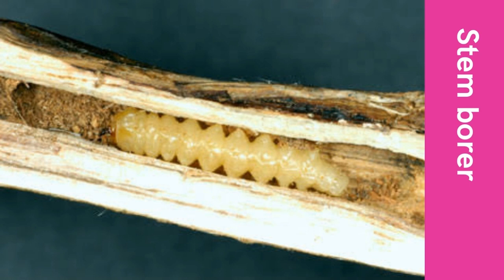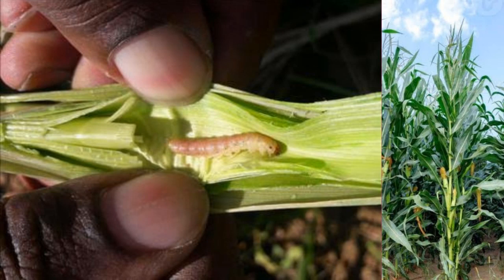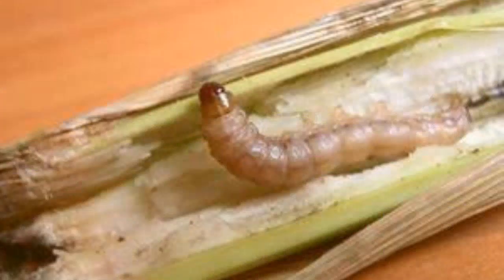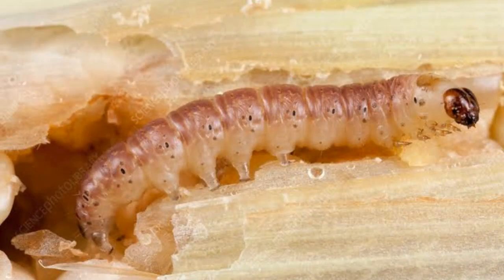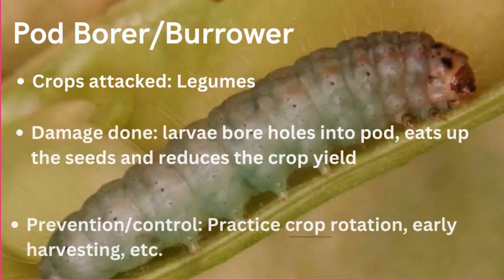Stem borers normally attack cereal crops, especially rice, maize, and guinea corn. They bore holes into the stems of crops, causing the plants to weaken, and they also eat up the tissues of the stem. Stem borers are examples of boring insect crop pests, while armyworm is an example of biting and chewing insect crop pests. Preventive measures include uprooting and burning infected plants, spraying with insecticide, and practicing early planting and crop rotation — which are examples of cultural methods of crop pest control.